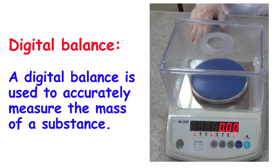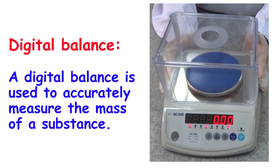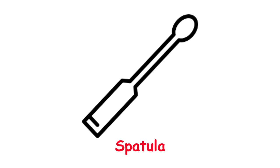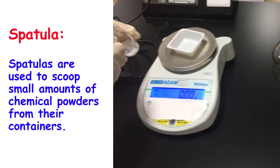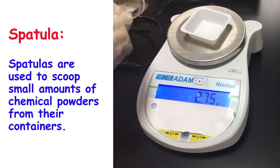A digital balance is used to accurately measure the mass of a substance. Spatulas are used to scoop small amounts of chemical powders from their containers.